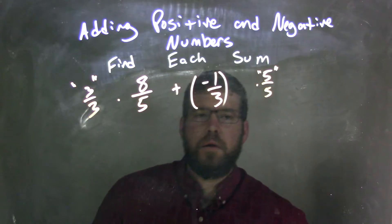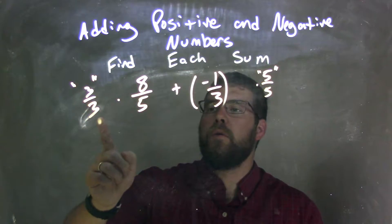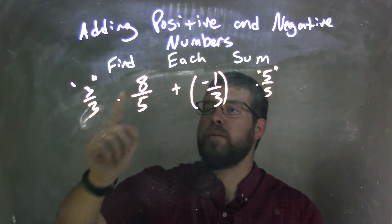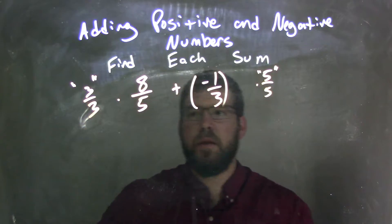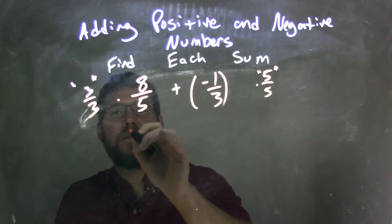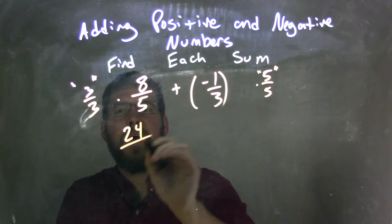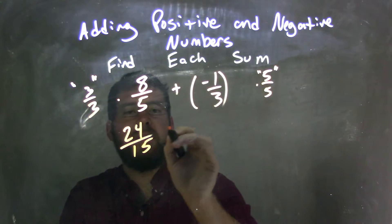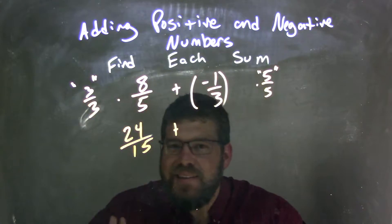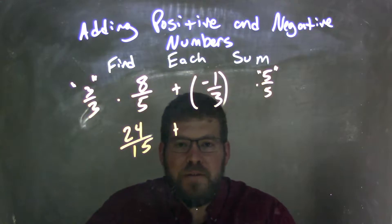Okay, when we multiply these out, 3 over 3 times 8 over 5, we multiply across the numerator. 3 times 8 is 24, and 3 times 5 is 15. And so the fraction 8 fifths is the same as 24 over 15, which is unsimplified.